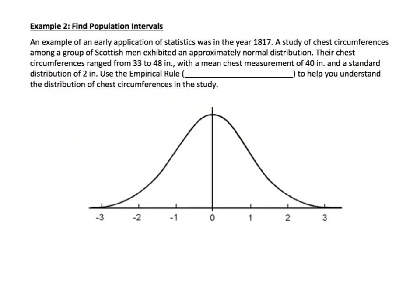Now that we've practiced, we're ready to solve a real-world problem. In 1817, a study of chest circumferences among Scottish men showed an approximately normal distribution. Their chest circumferences ranged from 33 to 48 inches with a mean of 40 inches and a standard deviation of 2 inches. Use the empirical rule — 68%, 95%, 99.7% — to understand the distribution.